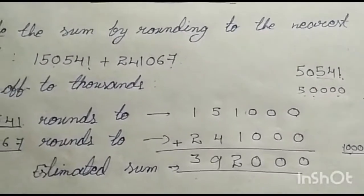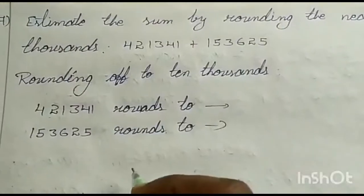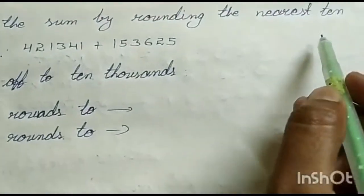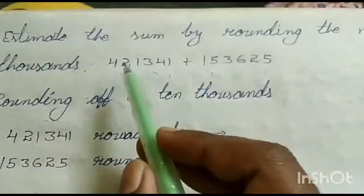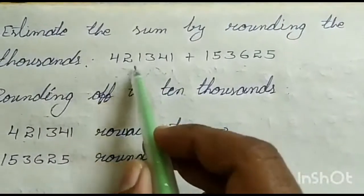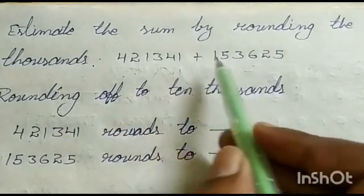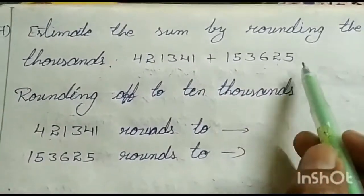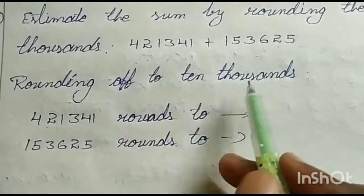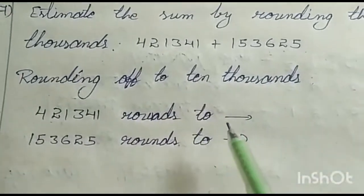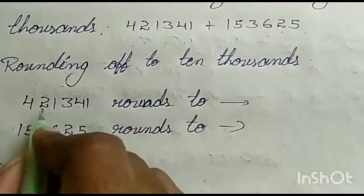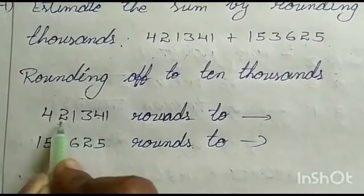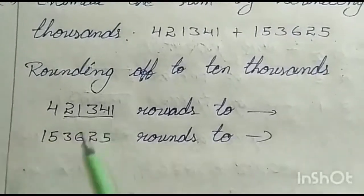Now let us do the 7th question. Estimate the sum by rounding to the nearest 10,000. The numbers are 4,21,341 plus 1,53,625. Now rounding off to the 10,000 — we have to see till the ten-thousands place: tens, hundreds, thousands, ten-thousands. We have to check till the ten-thousands place.